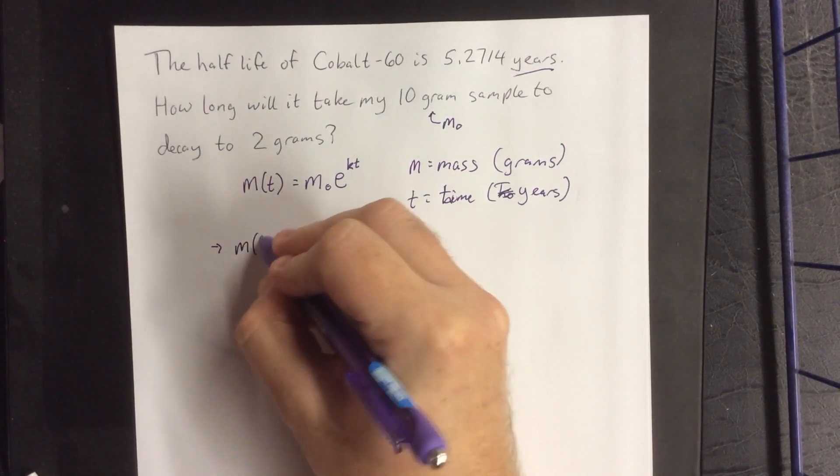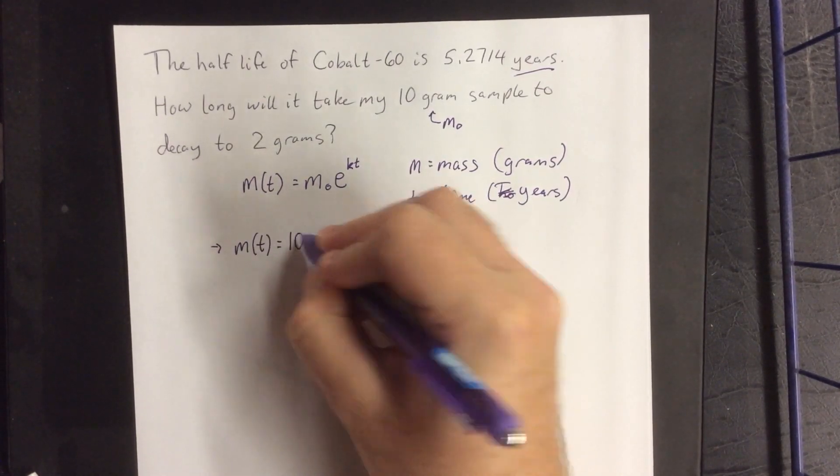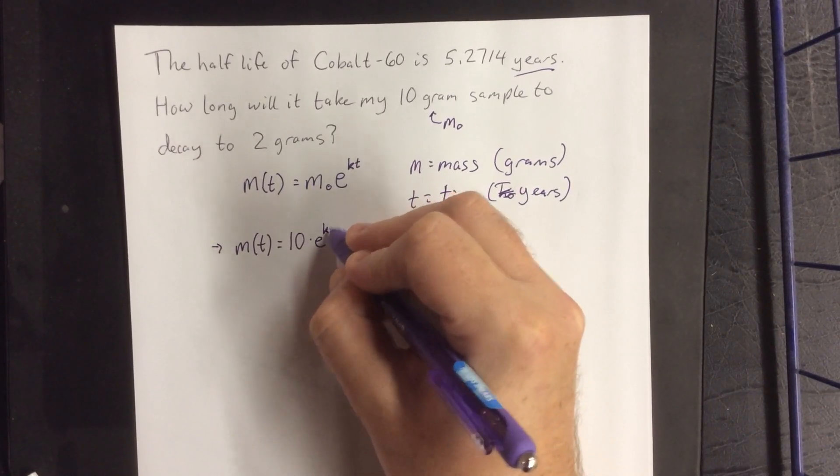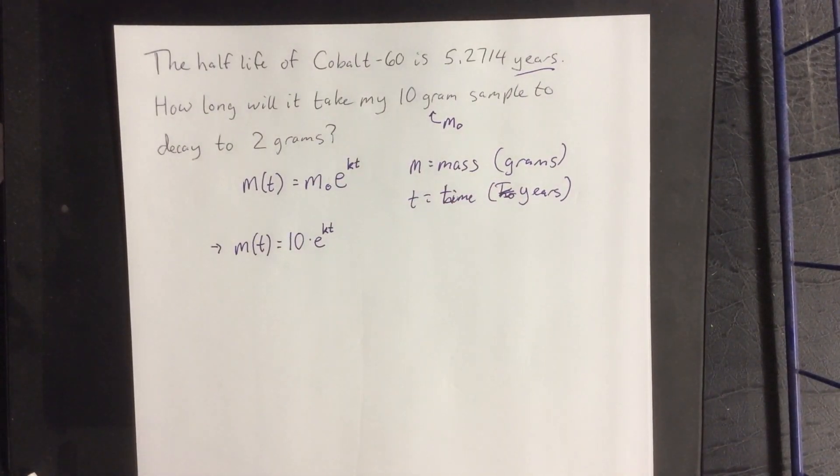This allows me to change our law of uninhibited decay to the following: m of t is going to be 10 times e raised to the kt power. At this point of the process, however, we still need a value for k.